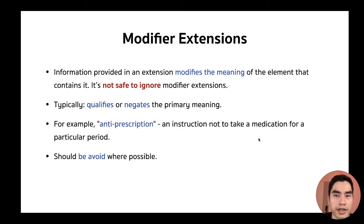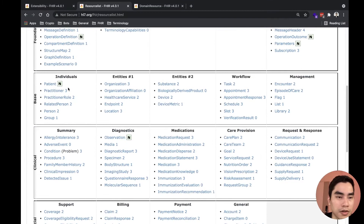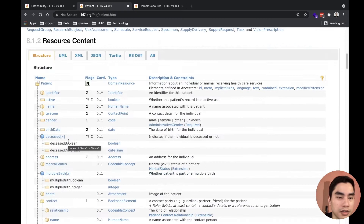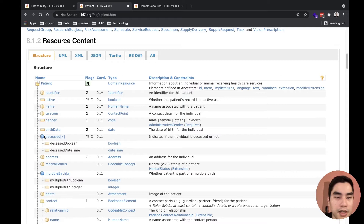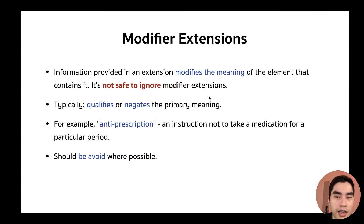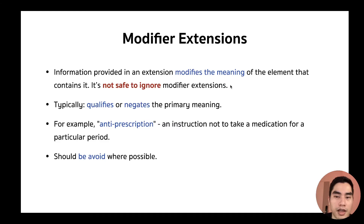The next type is modifier extension. A modifier extension is like a modifier element. From our earlier module, we discussed modifier elements — for example, deceasedX, which indicates whether a patient is already dead or not. That element is marked as a modifier, meaning it can significantly change the meaning of the resource. Modifier extension works the same way — it means the extension can significantly modify the meaning of the element that contains it.